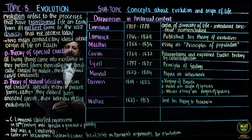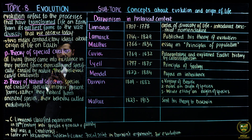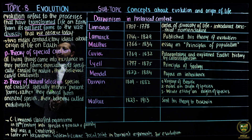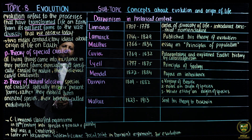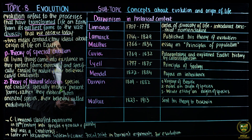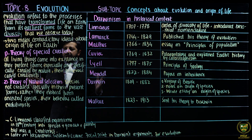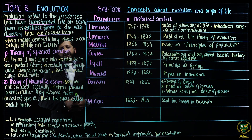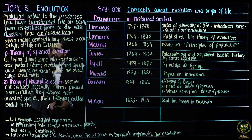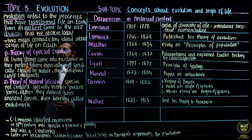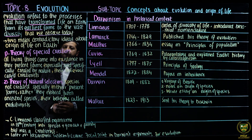There are two major contradictory ideas about the origin of life on Earth. There are two schools of thought which give their views regarding the origin of life on the face of the Earth. The first theory is the theory of special creation and the second theory is the theory of natural selection.